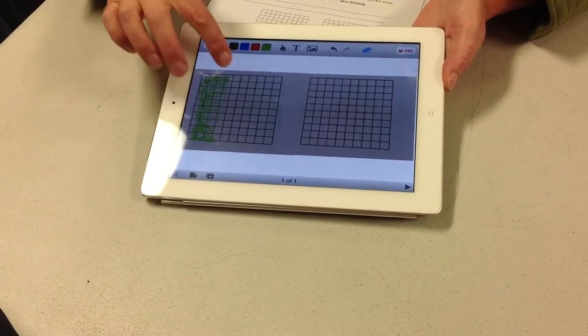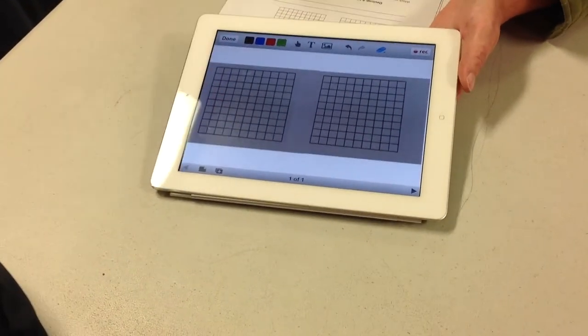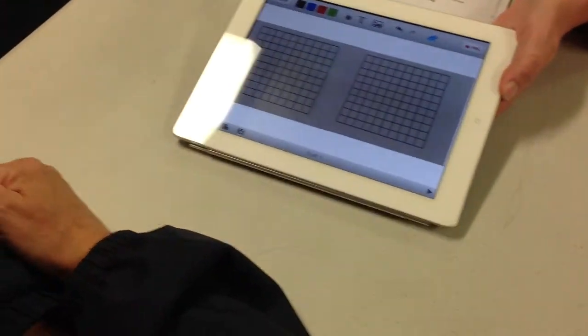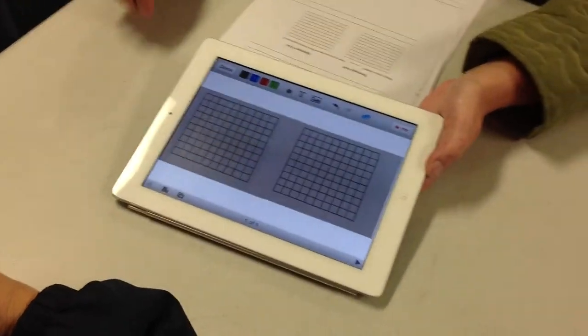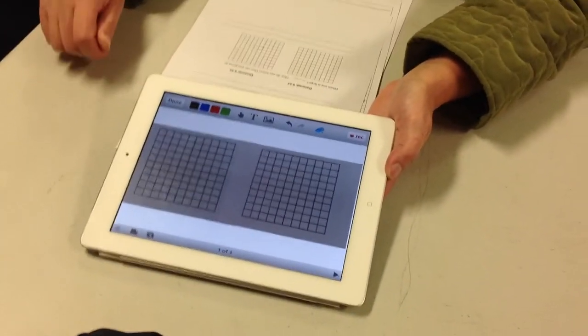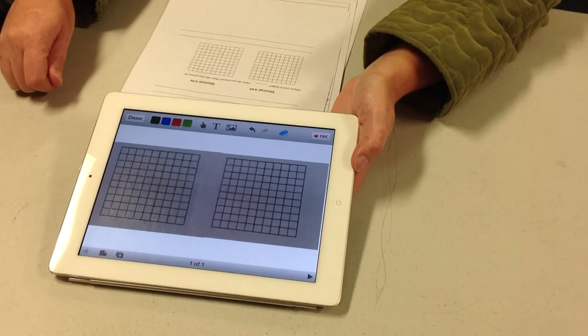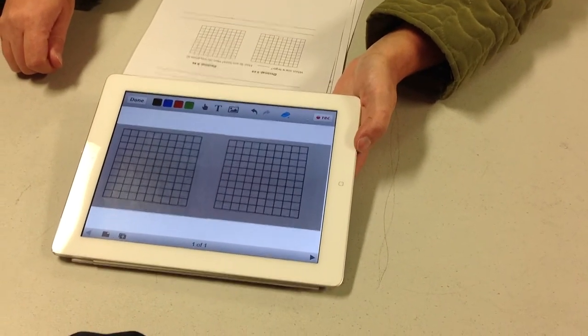Now, let's rub it off. And now I want you to work out which decimal is bigger. Which is largest, 0.45 or 0.54?